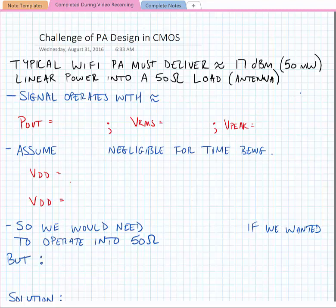WiFi signals operate with what we call a large peak-to-average power ratio, the PAPR. The peak-to-average power ratio can be 8 to 10 dB, we'll just call it 8 for now, which means that the saturated output power of the PA needs to be about 25 dBm.